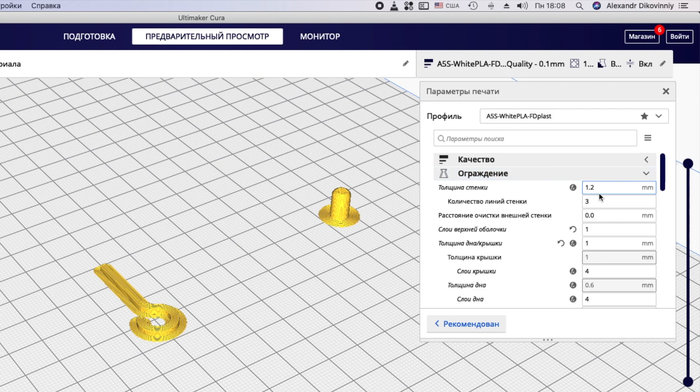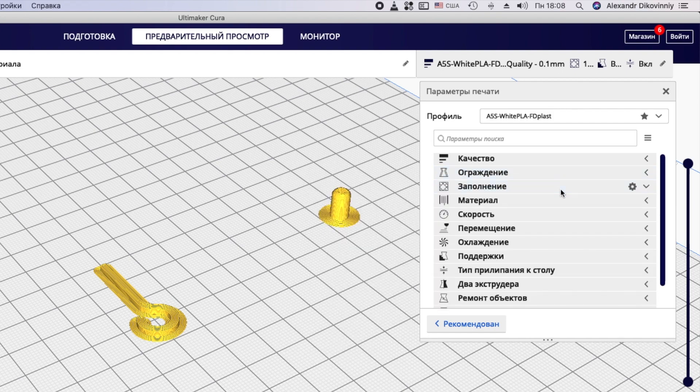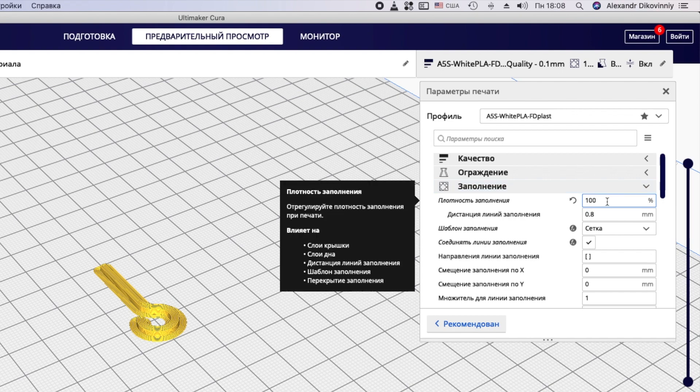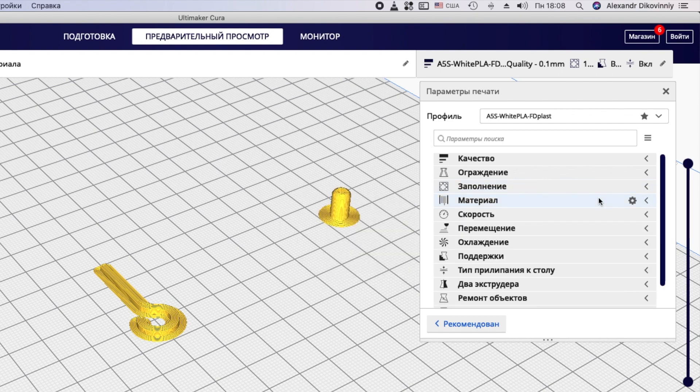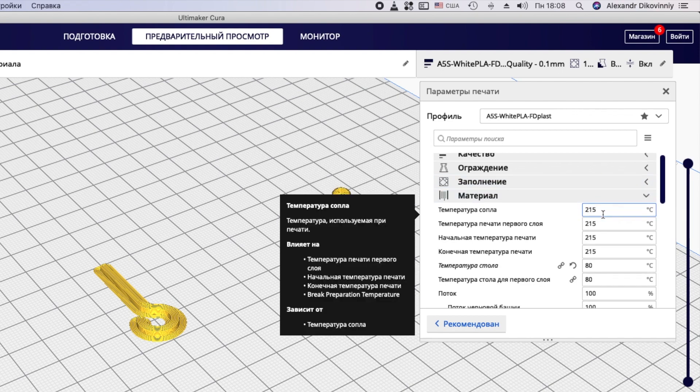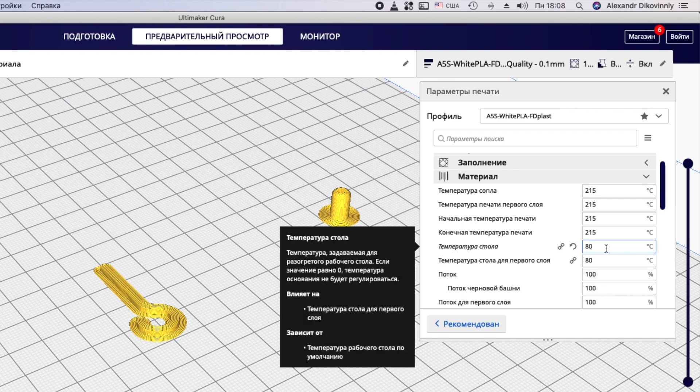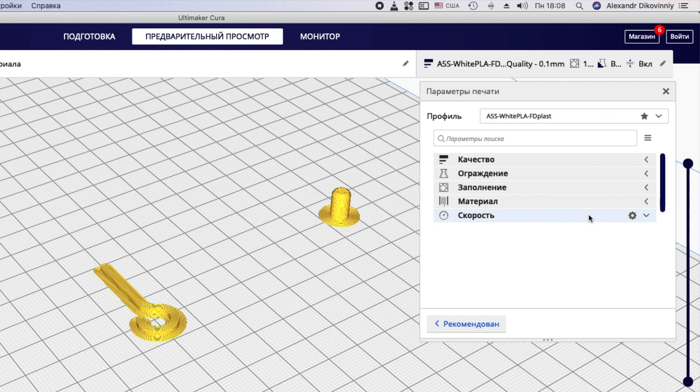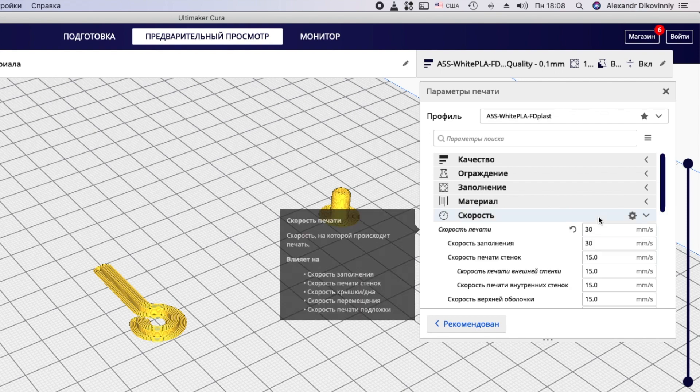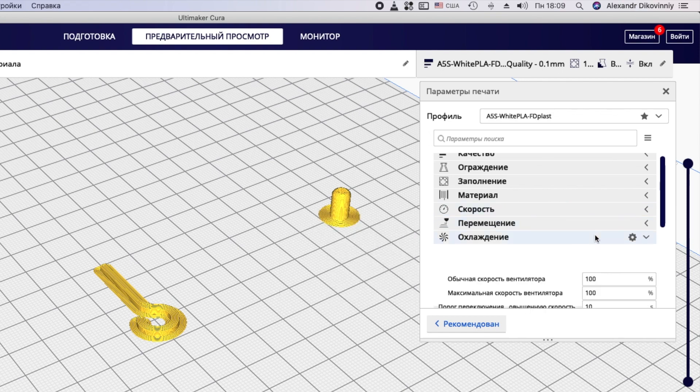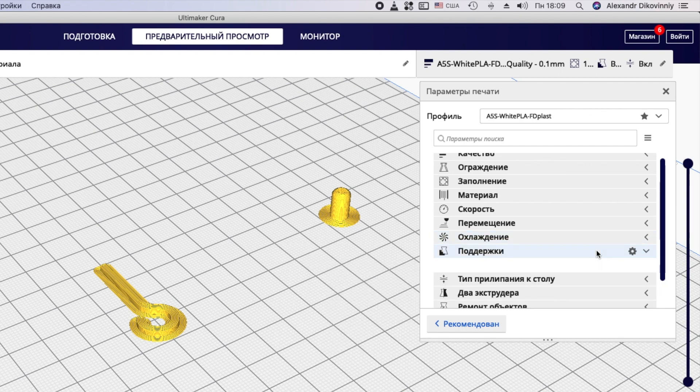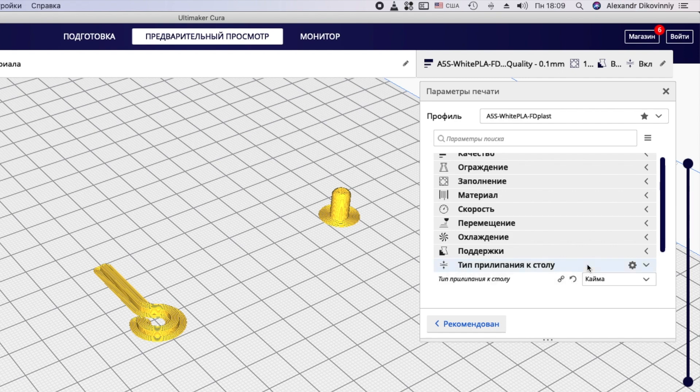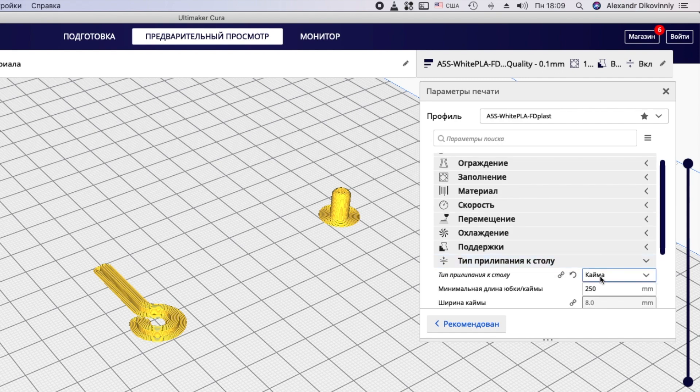Wall thickness 1.2mm. Infill is 100%. The nozzle temperature is 215 degrees. Table 80 degrees. Print speed 30mm per second. 100% cooling.